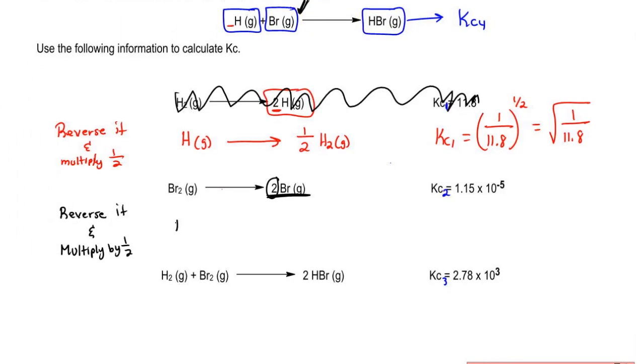This becomes Br gas gives me half Br2 gas. So we reversed it so it becomes the reciprocal. And we multiplied by a half so half becomes the power. And remember, half power is the same thing as square root.